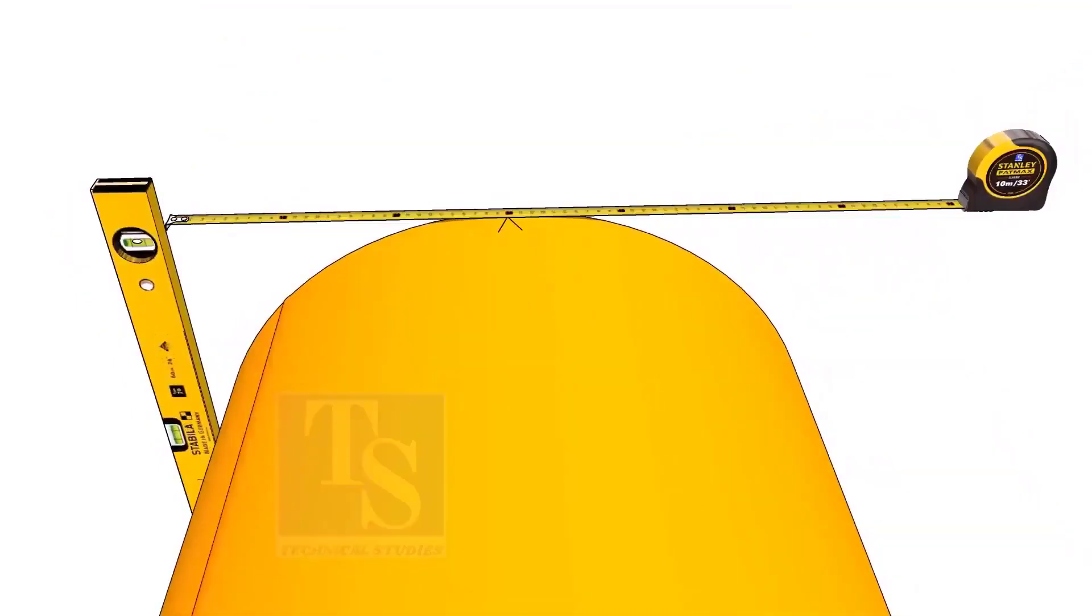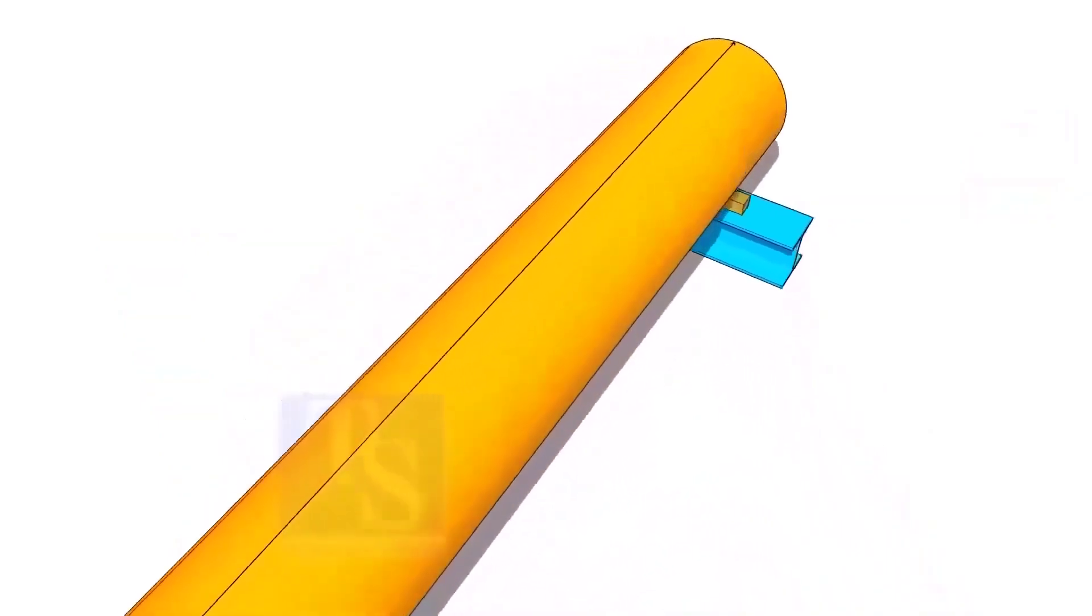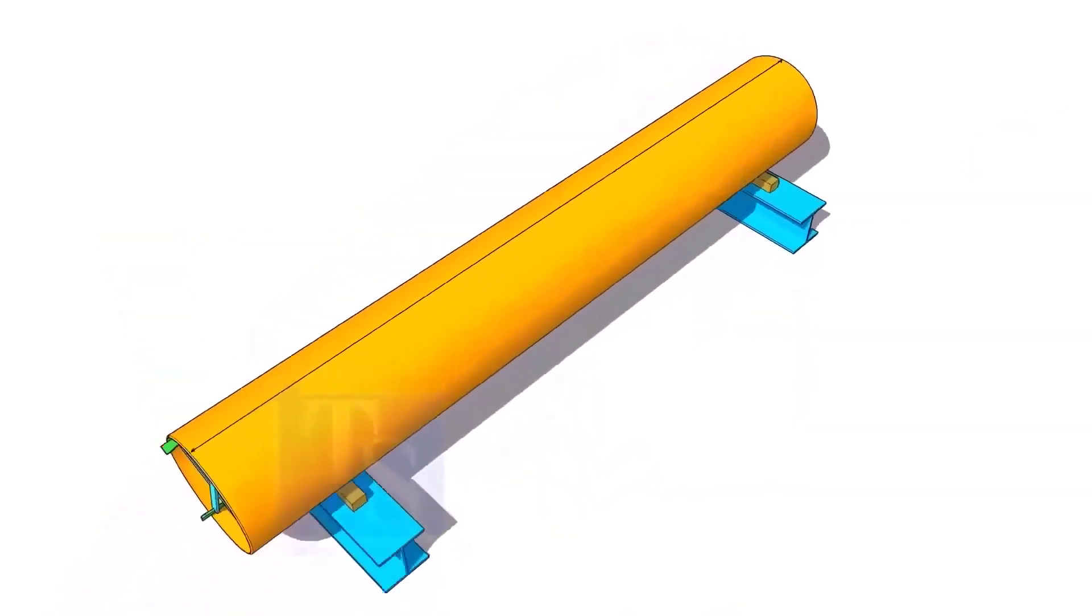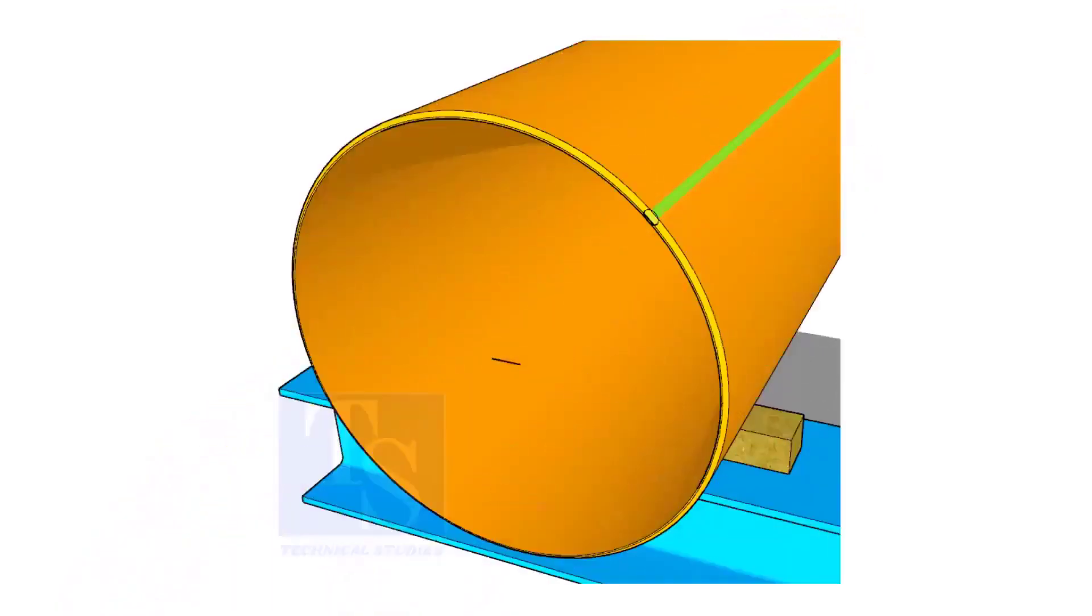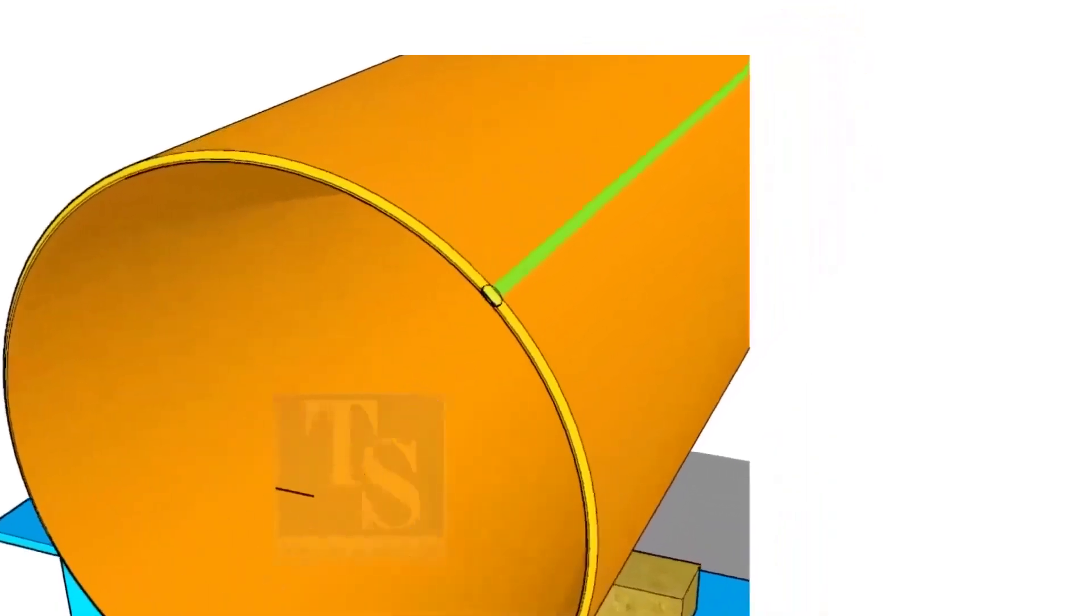Draw a line connecting these marks. If the pipe is welded, you can probably choose the center of the welding as center of the pipe. But you need to check and make sure.